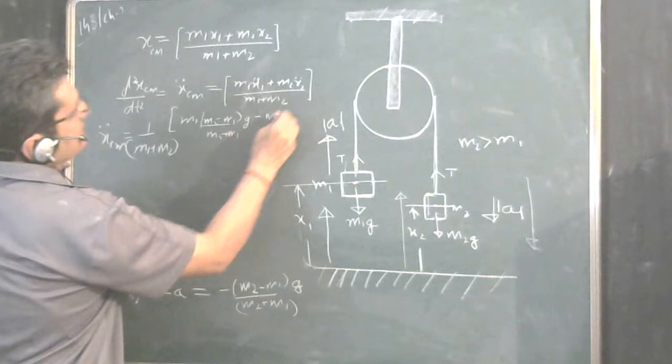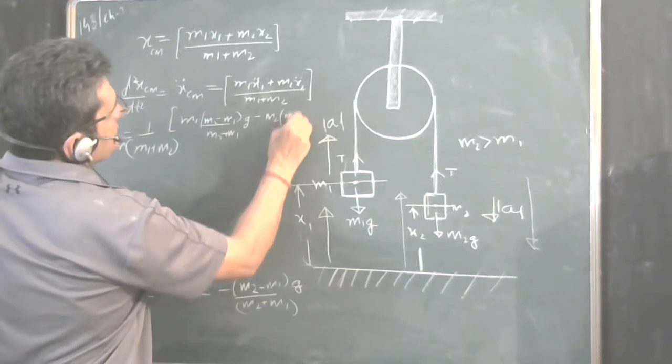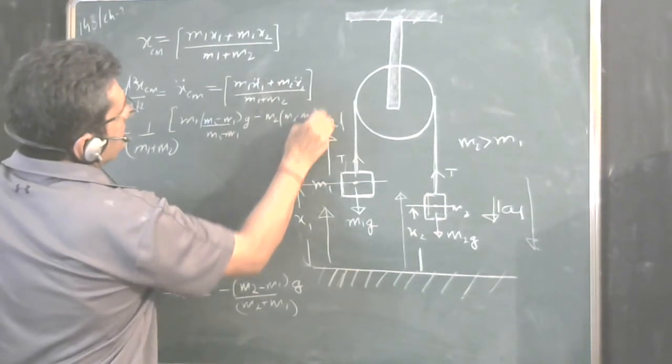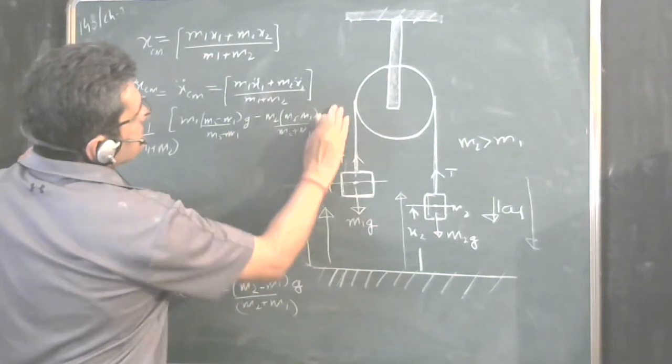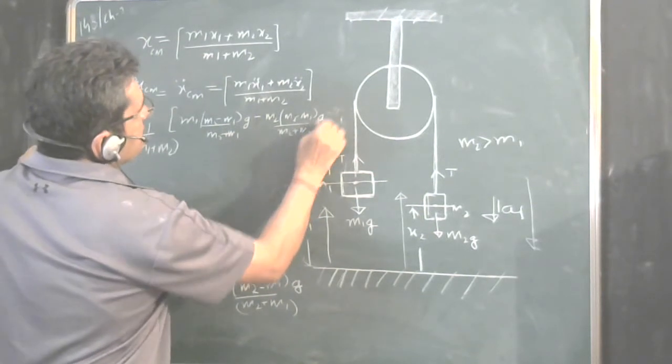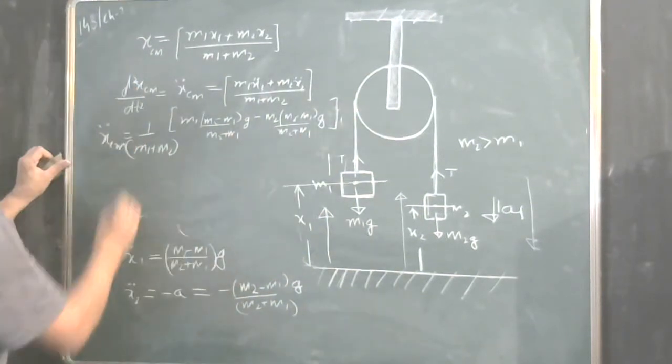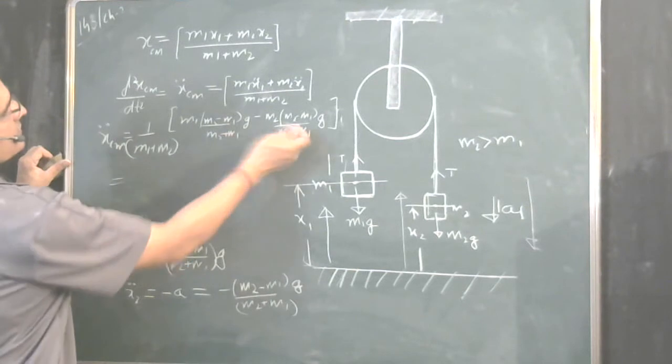So, bring minus sign here. It is M2 minus M1 upon M2 plus M1 into G. M1 plus M2 denominator is common so this is also common M2 minus M1 g.